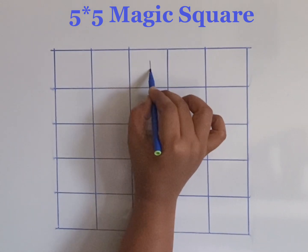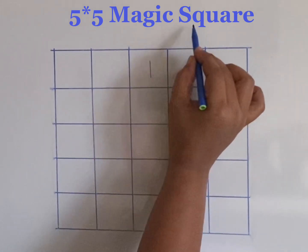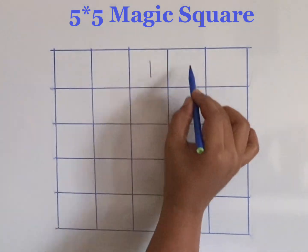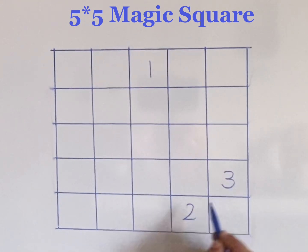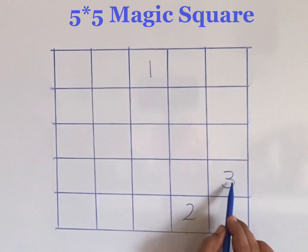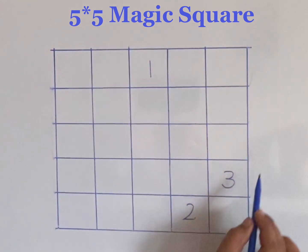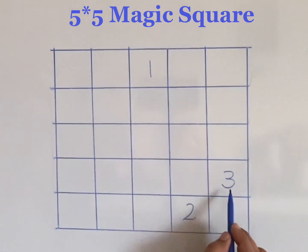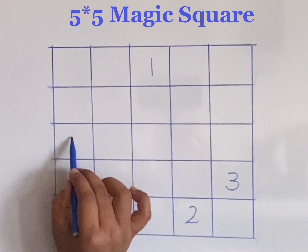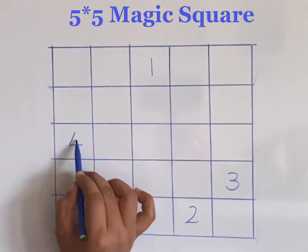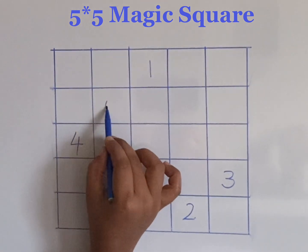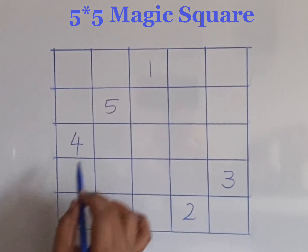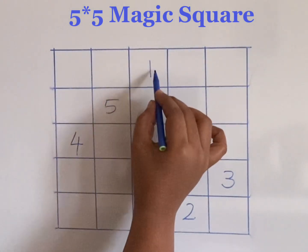We are starting with the middle cell of the first row with number one. Here no diagonal cell is vacant, so going to the bottom cell of the next column and filling it with number two. From here the diagonal cell is vacant so fill it with number three. There is no diagonal cell vacant and no columns further, so go to the leftmost cell of the upper row and fill it with number four. From here the diagonal cell is vacant so filling with number five.